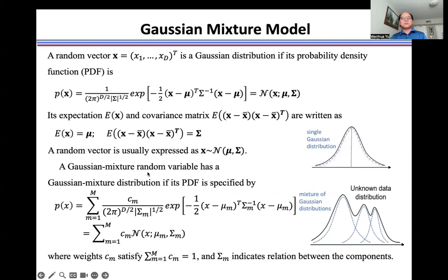A Gaussian mixture random variable has a Gaussian mixture distribution if its probability density function is specified by weighted sum here, where weight C_m satisfies its sum is equal to one, and Σ_m indicates the relation between the components.